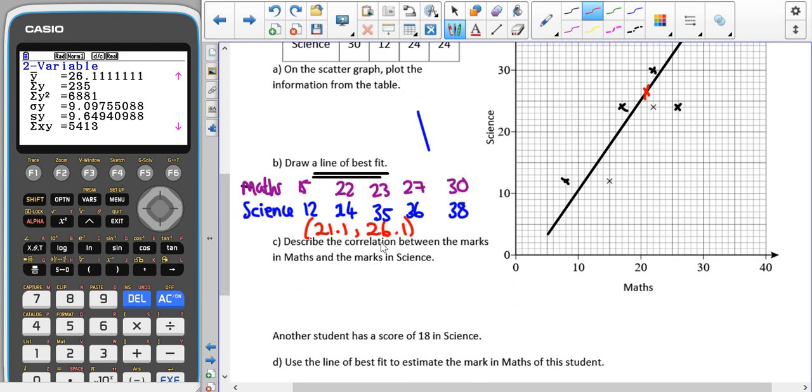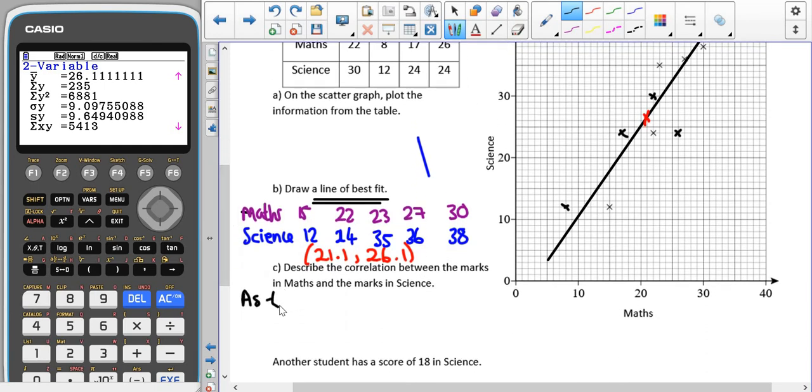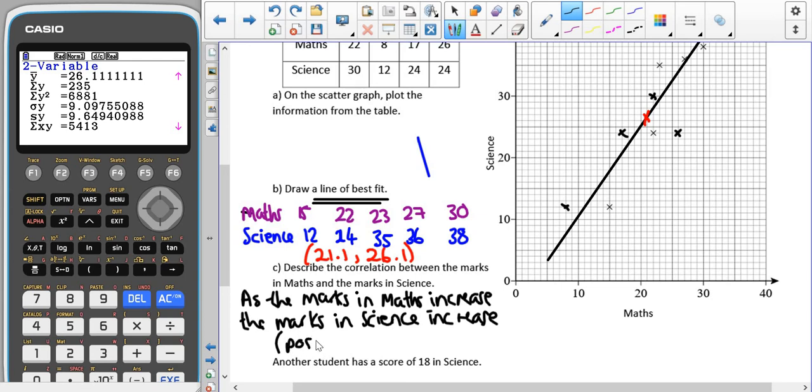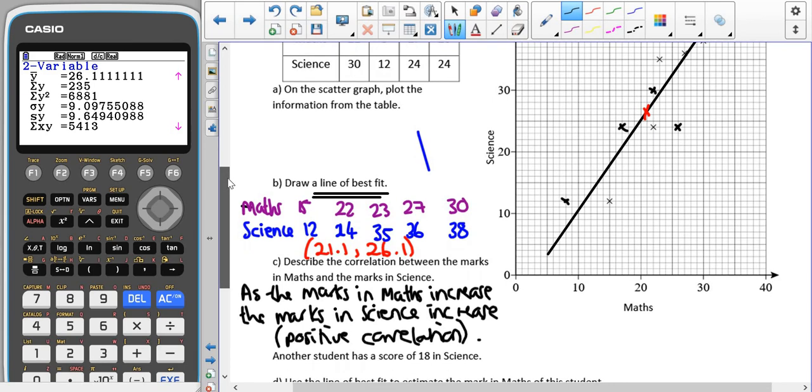So then here, we're asked to describe the correlation between the marks in maths and the marks in science. So we can see here, as the marks in maths are increasing, the marks in science are increasing, and this represents a positive correlation. Now, you need to be careful not to make any definitive statements. So it's not those that get a higher mark in maths get a higher mark in science, because that is making a comment about certainty. And all we can do is infer that there is a correlation between the two, not that one is affecting the other.